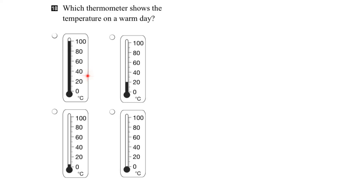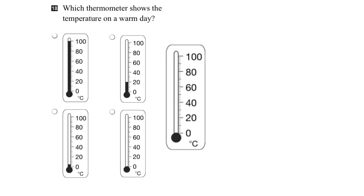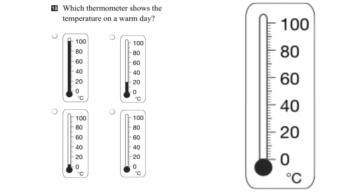In this question we have to determine which of these thermometers shows the temperature on a warm day. Let's bring in a thermometer and expand it so we can use it for reference. This thermometer starts at 0 and goes all the way up to 100, and this is in Celsius. So let's start down here at 0 — what would a temperature of 0 degrees Celsius be like?